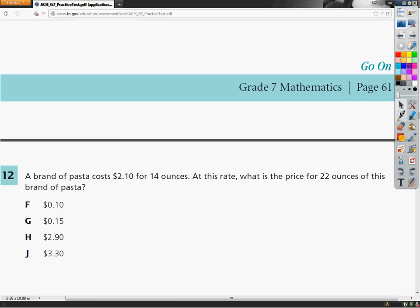Welcome. This is the TCAP 7th grade practice test, math section, Number 12. The question says, a brand of pasta costs $2.10 for 14 ounces. At this rate, what is the price for 22 ounces of this brand of pasta?